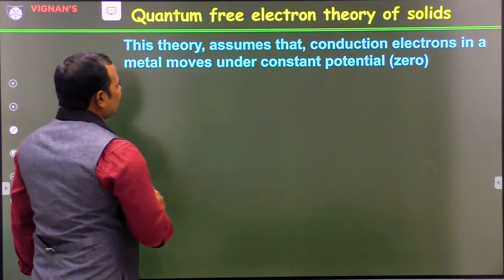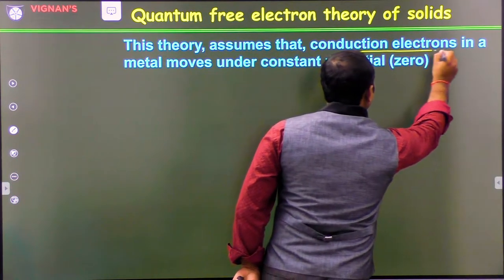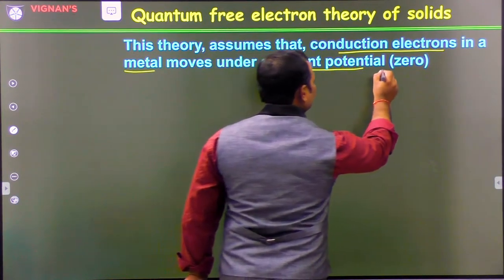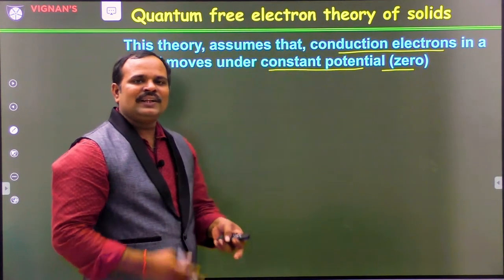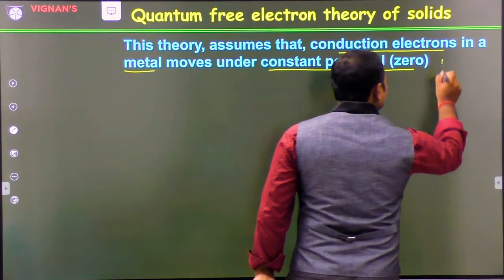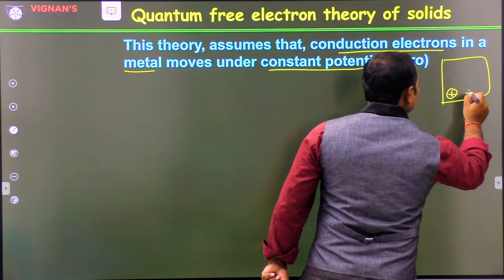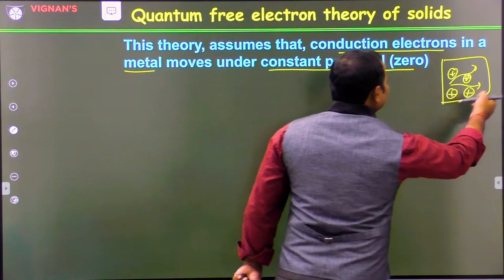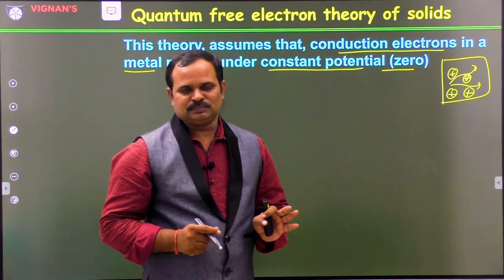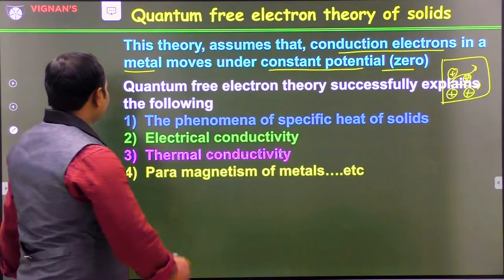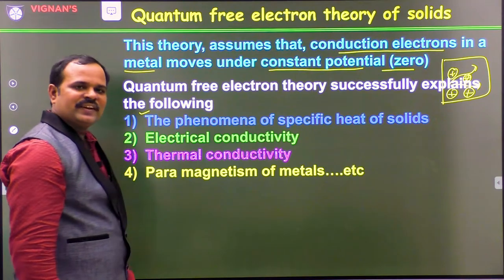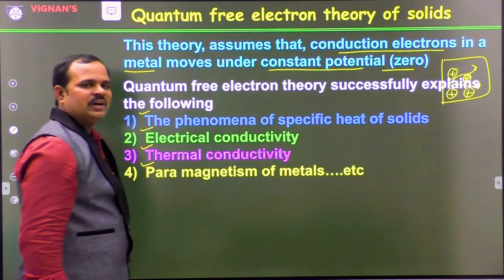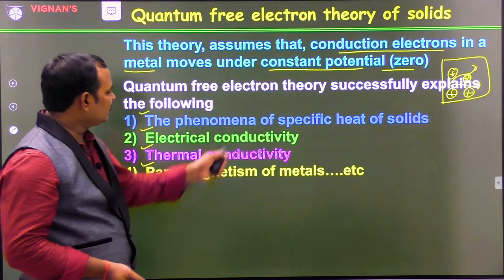Quantum free electron theory assumes that all the conduction electrons in a metal move under constant potential — constant or zero potential. This is important. This is what Sommerfeld assumed: when an electron is moving in a material through the metal ions, it experiences zero potential or constant potential. Quantum free electron theory successfully explained phenomena of specific heat of solids, electrical conductivity, thermal conductivity, paramagnetism, and so on. Many properties of solids were explained using this theory.